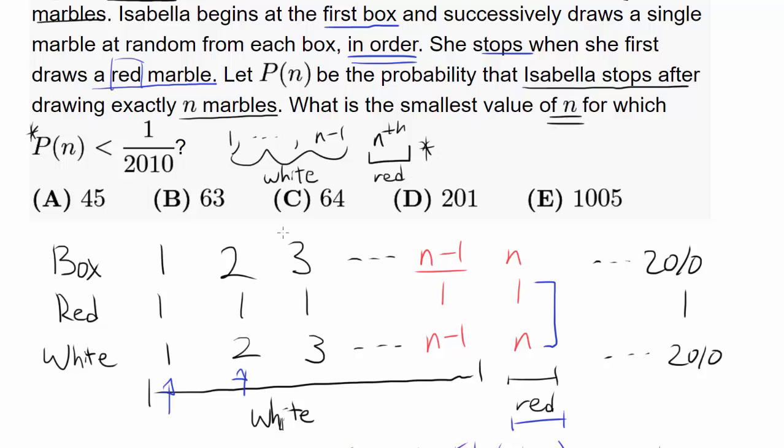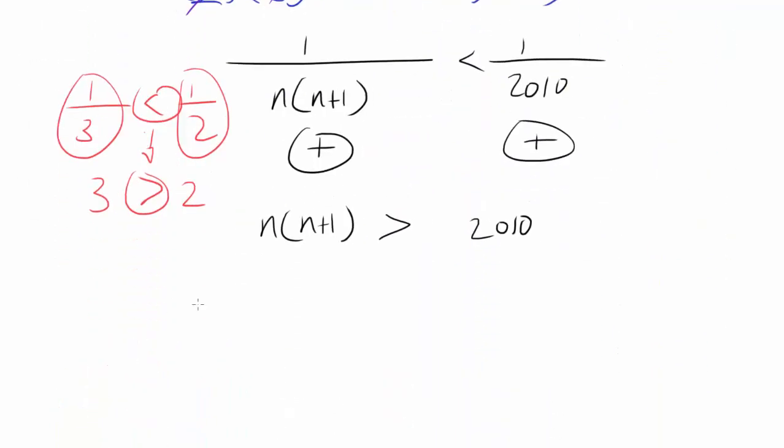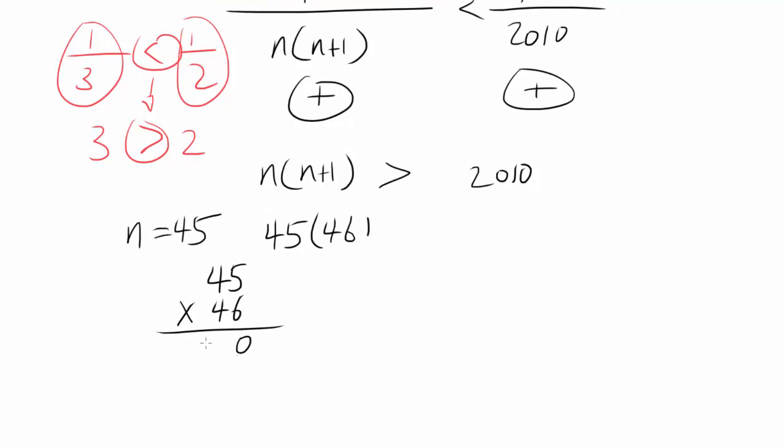We wish to find the smallest value of n which satisfies this equation. Since we have multiple choice options, let's start with 45. When n is 45, you have 45 times 46, which is 2070. That's barely greater than 2010.